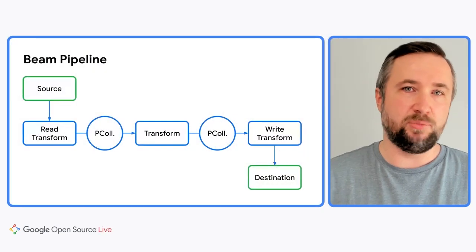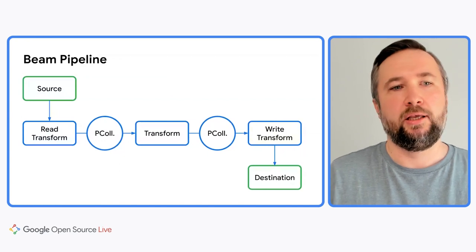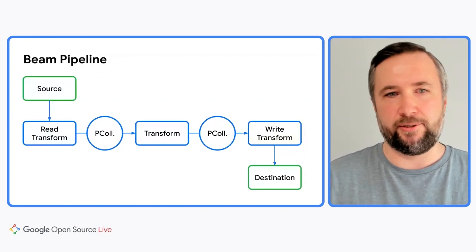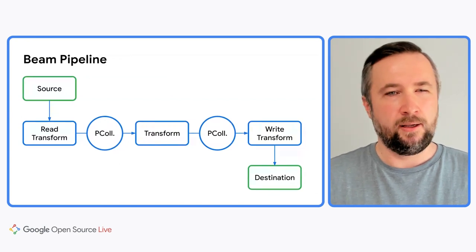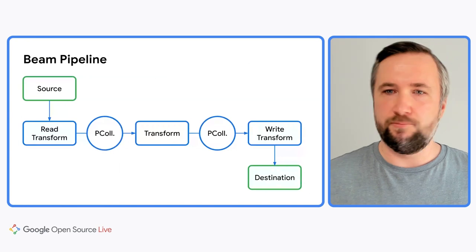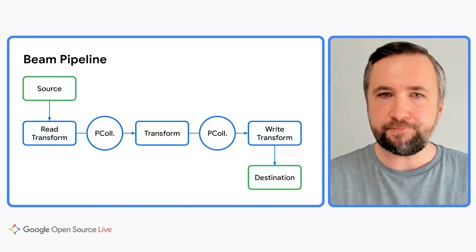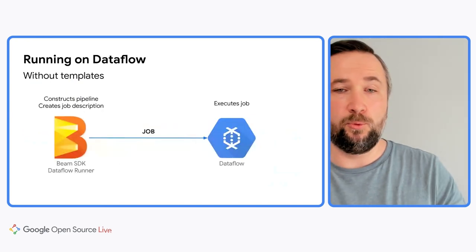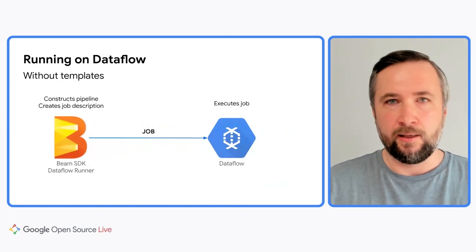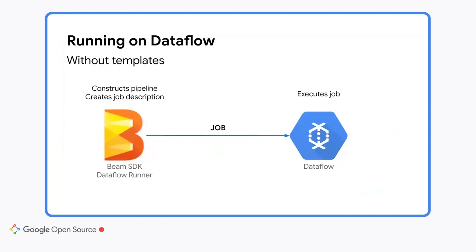So now let me explain what a template is. Let's say you have a Beam pipeline which typically reads some data from a source, adds the elements to a p-collection, applies some transforms, and eventually writes the results to a destination. Without templates, you would usually write the pipeline code and execute it using one of the Beam runners. In the case of the Dataflow runner, it will translate the pipeline into a Dataflow job description and submit it to the Dataflow service for execution. You would typically execute this on your local machine, possibly building the pipeline directly from the source code.